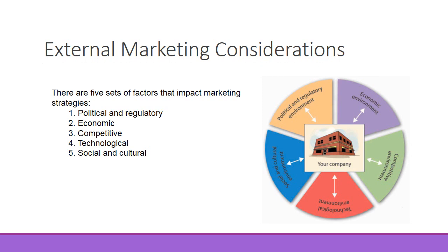Additionally, we're looking at external marketing considerations. There are five sets of factors that impact the marketing strategy. First, political and regulatory issues. For example, if we are in a situation where we don't want to do business with Saudi Arabia anymore, we're going to have to adjust our market. Companies in the United States that sell weapons to Saudi Arabia would be adjusting their marketing considerations.